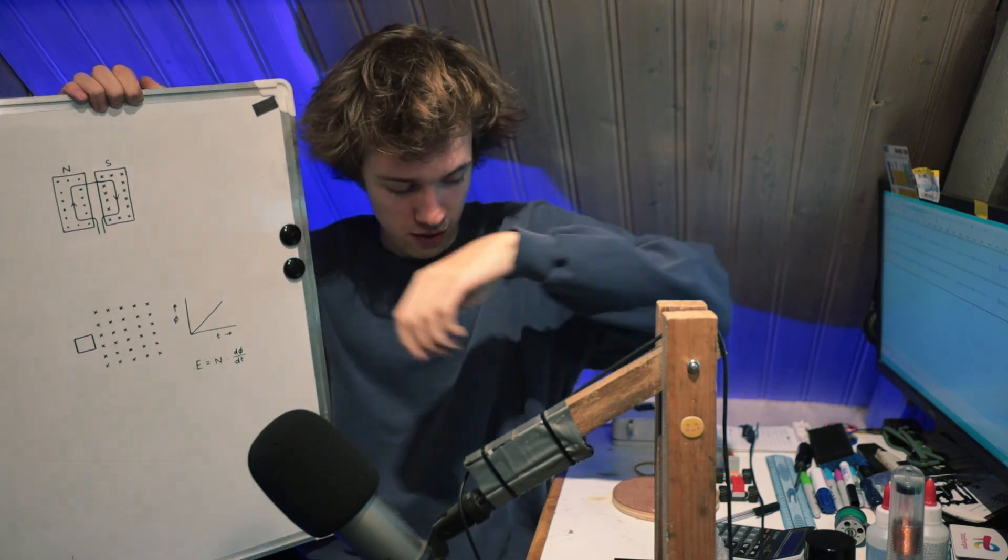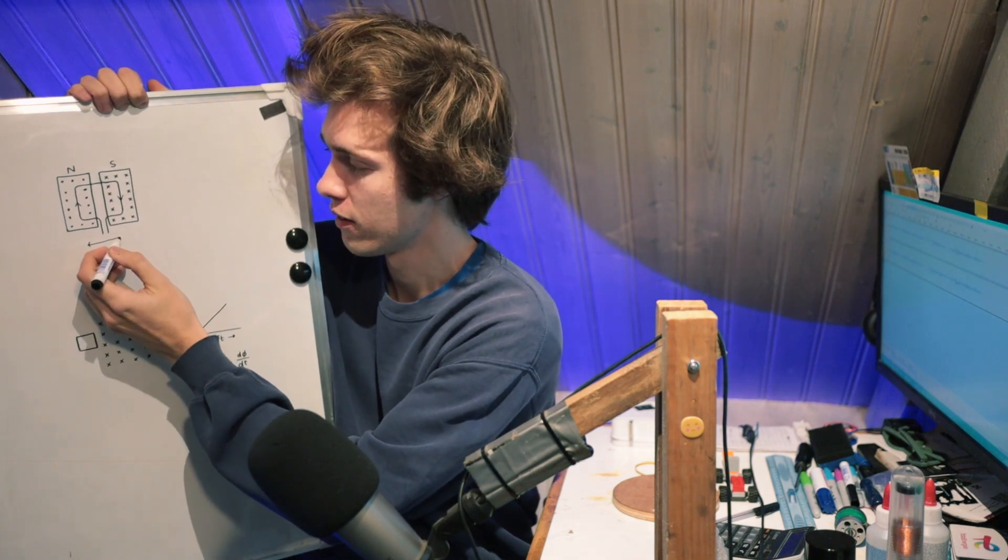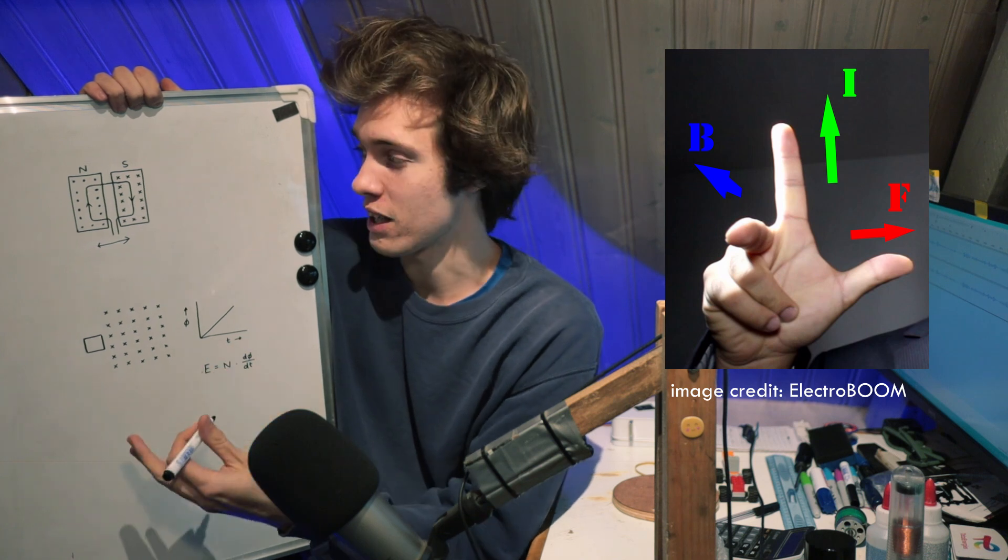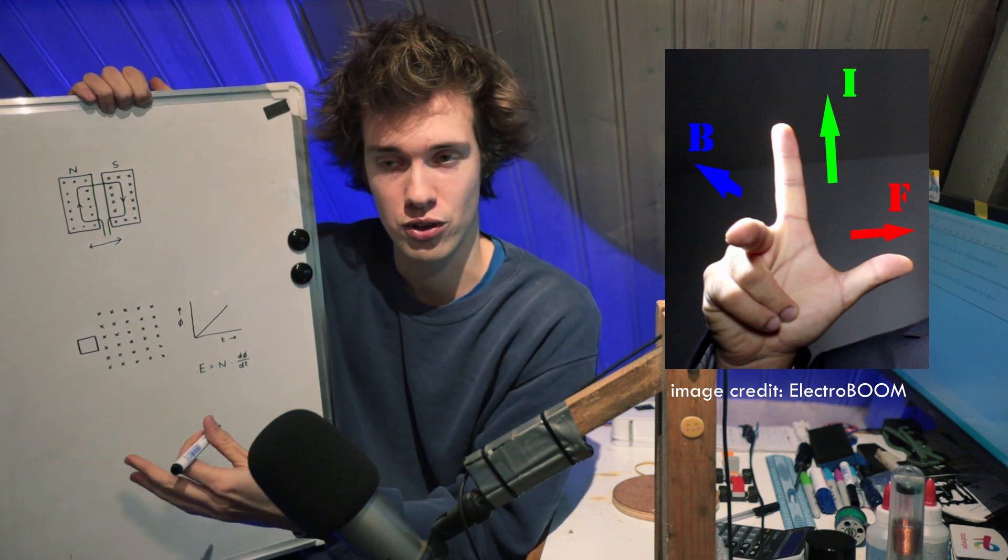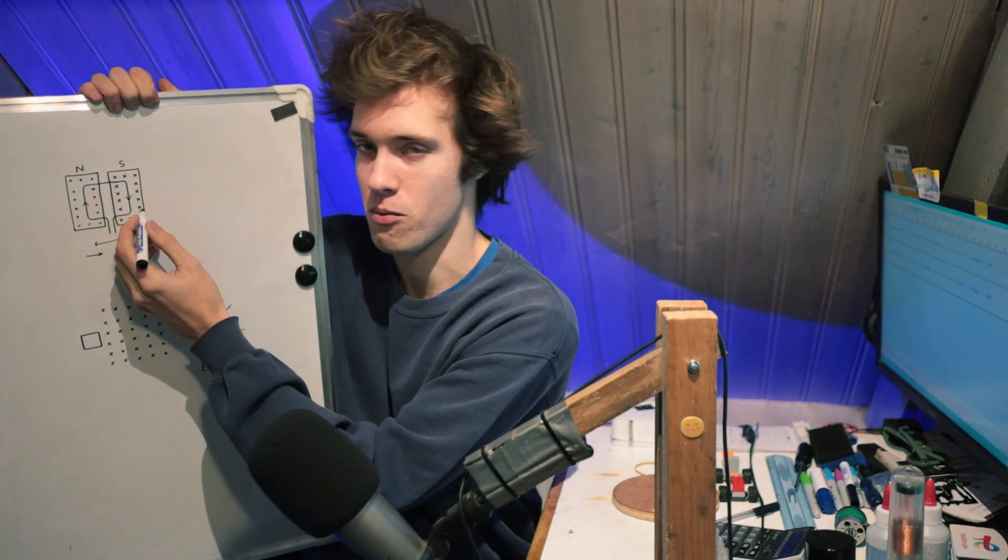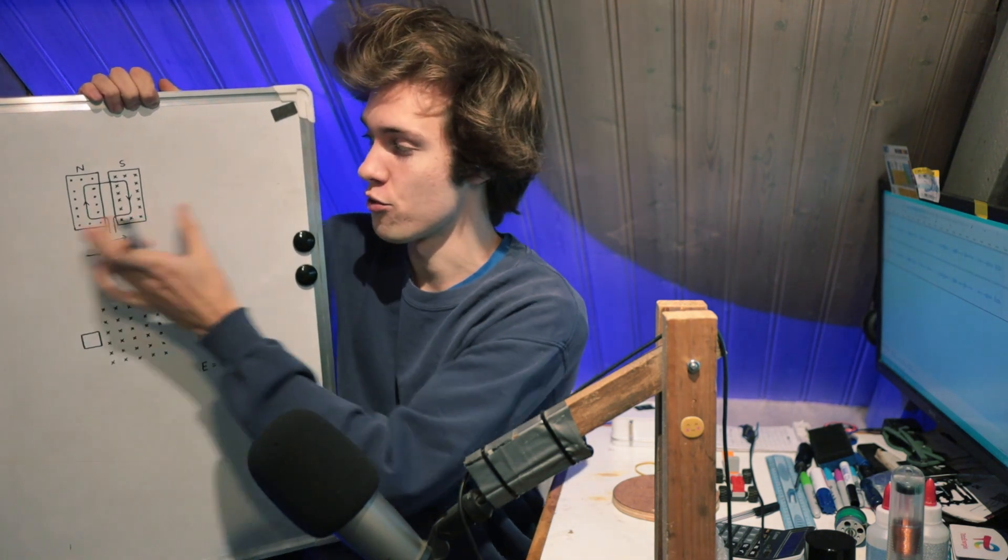Now imagine that in this particular motor, the winding is able to move side to side, or maybe the magnets are able to move side to side, doesn't really matter. Now what you can do, as you might know, you can use the right-hand rule to determine the force that gets applied to a wire that carries an electric current in a magnetic field. And if you apply that right-hand rule to this side of the winding, you'll find a force in this direction. And if you apply that same right-hand rule to this side of the winding, you'll also find a force in this direction. So in other words, our winding wants to move this way, or maybe the magnets want to move that way.